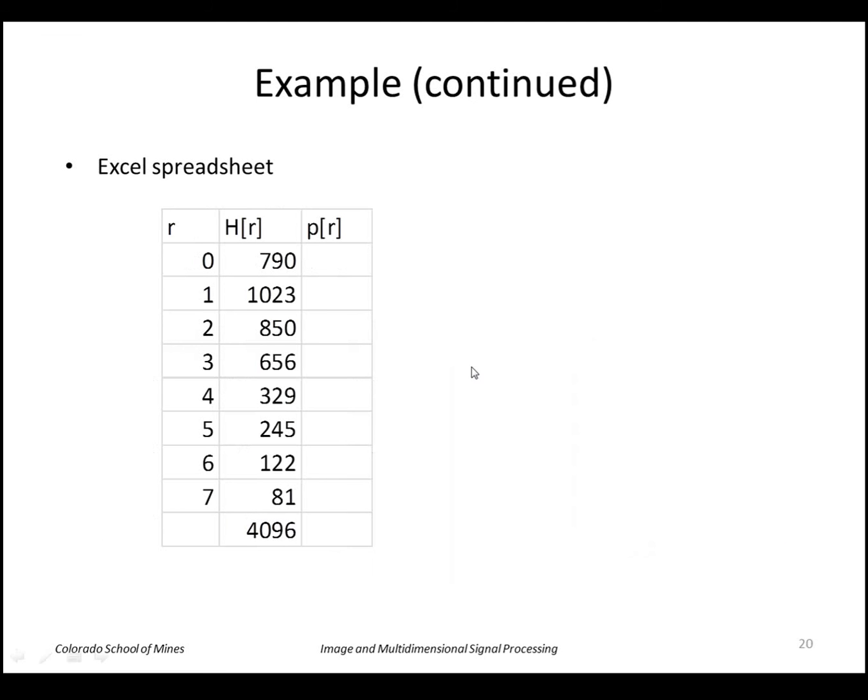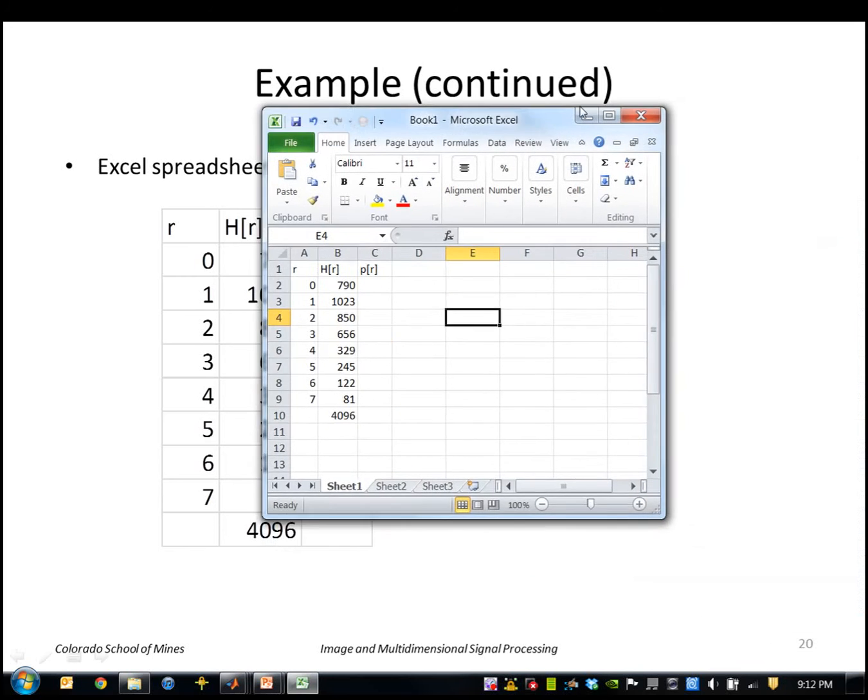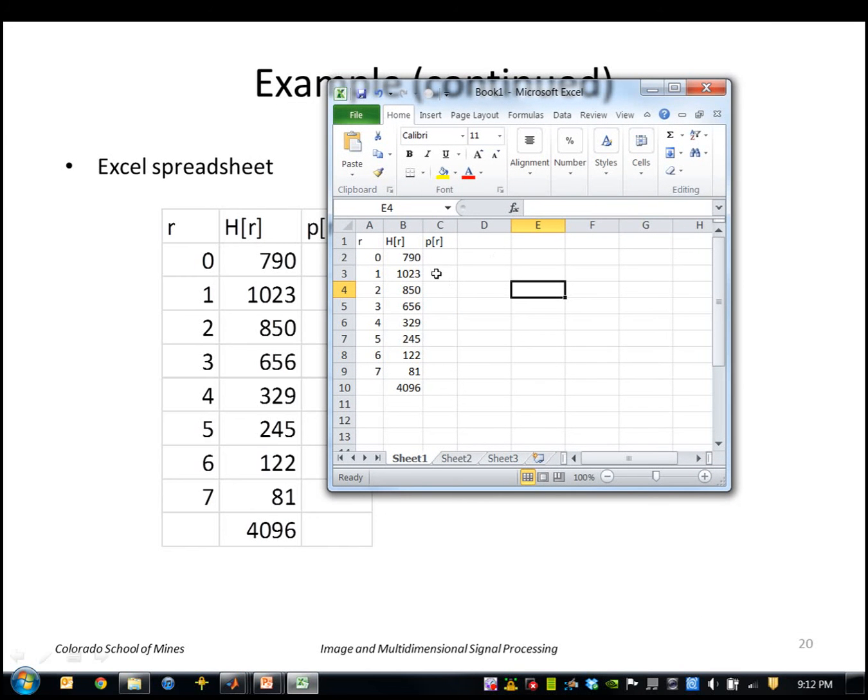I found that Excel actually is a useful tool for problems like this. I've entered the values of the histogram as shown here, as you can see they sum to 4096.